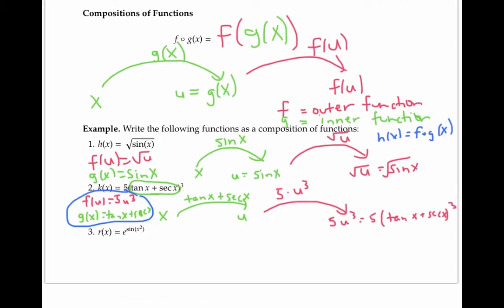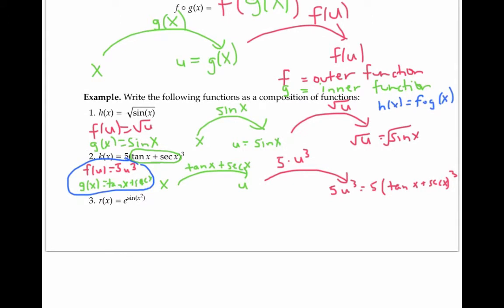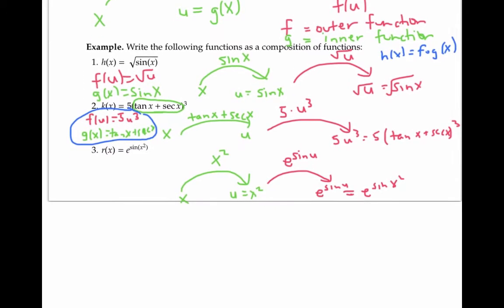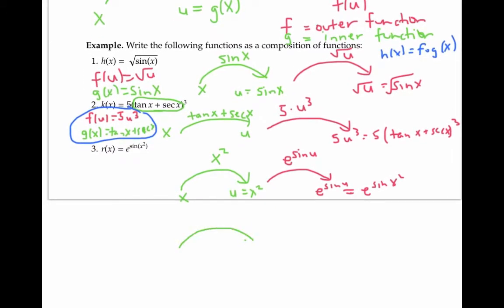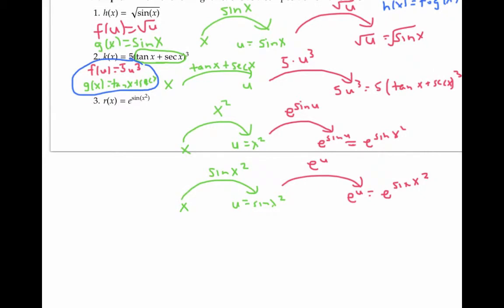There are sometimes several different ways of writing a function as a composition of two functions. You may have written R of x as x squared followed by e to the sine of u, or you might have written it as sine of x squared followed by e to the power.